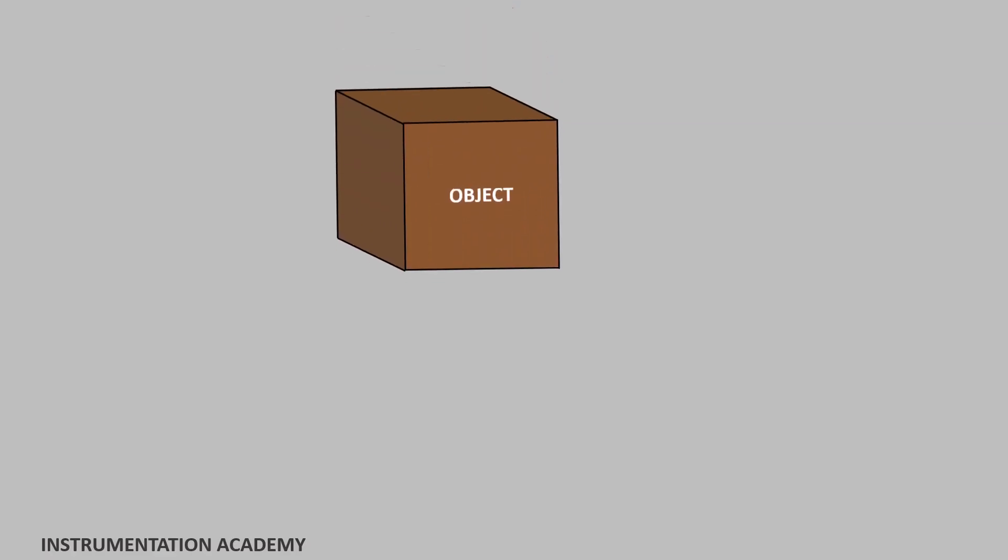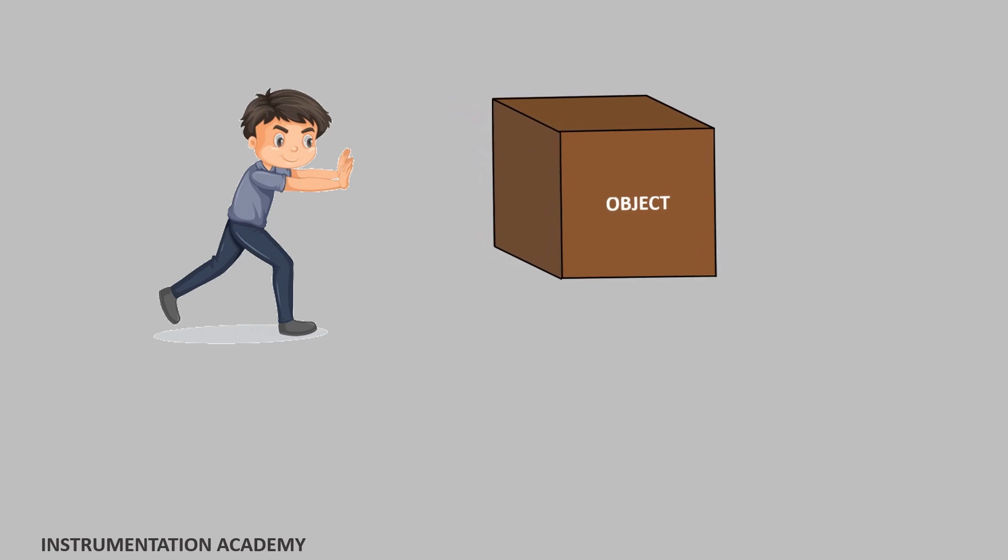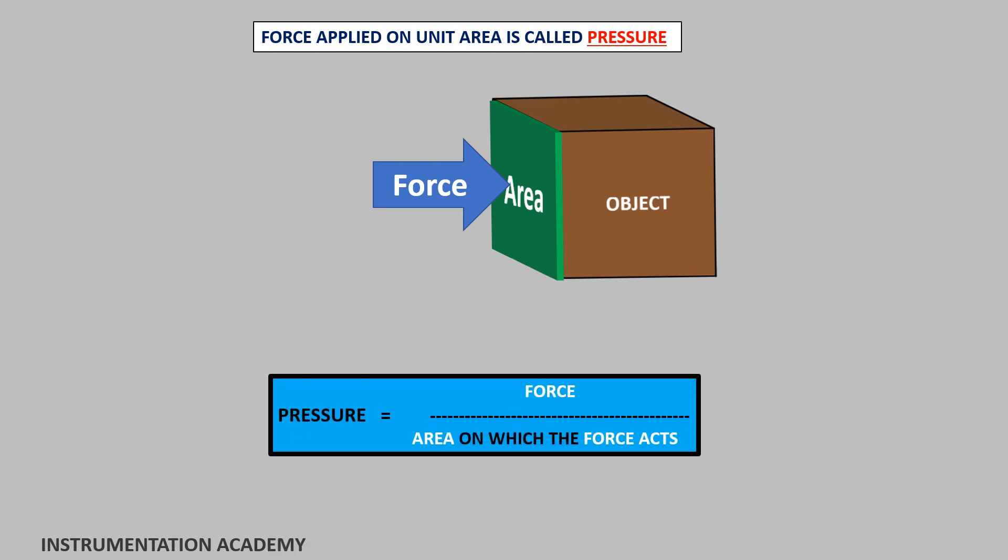The push or pull applied on an object that causes the object to change its velocity is known as force. Force applied on a unit area of a surface is known as pressure. Pressure is equal to applied force divided by area on which the force acts. If the area is smaller, the pressure on the surface will be greater and vice versa.